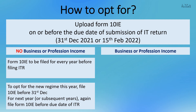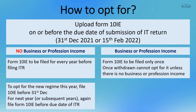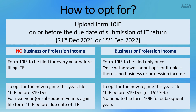For taxpayers with business or profession income, Form 10-IE needs to be filed only once and will be valid for subsequent years. Such taxpayers can withdraw from the new tax regime in subsequent years, but once withdrawn, they cannot opt for it again unless they stop having business or profession income. So to opt for the new regime this year, file Form 10-IE before 31st December or 15th February as applicable.